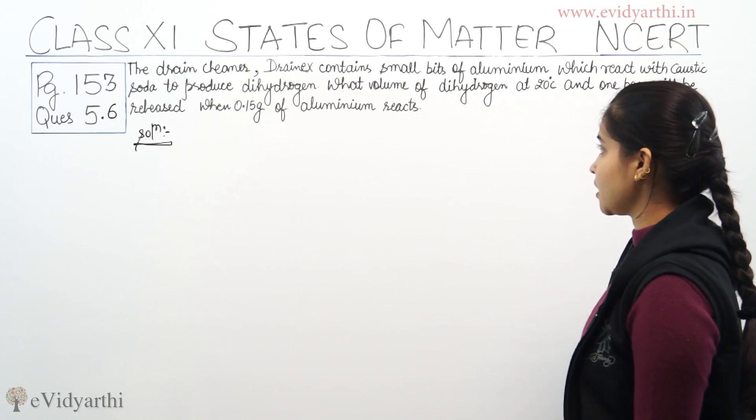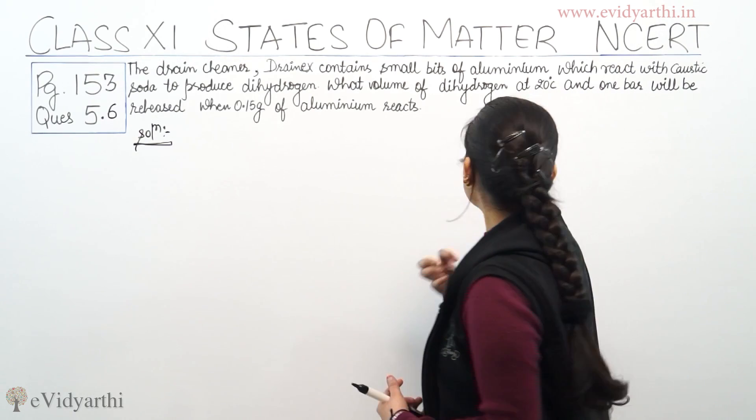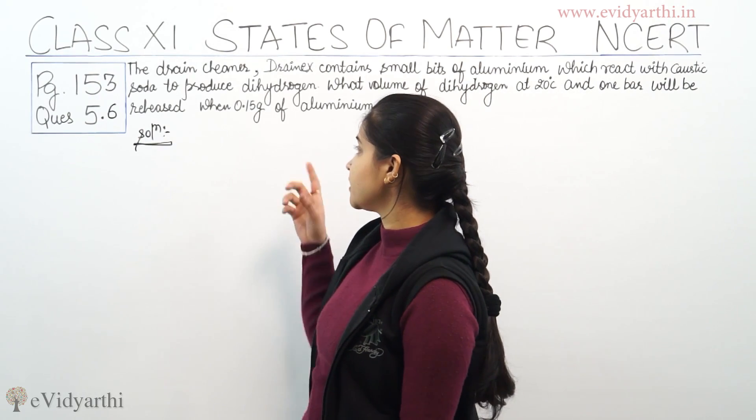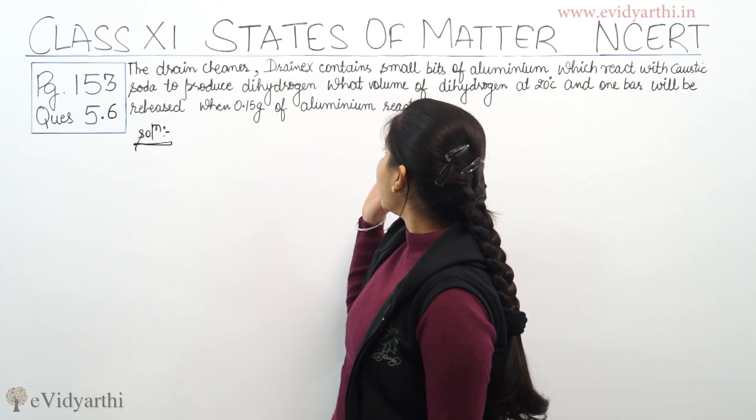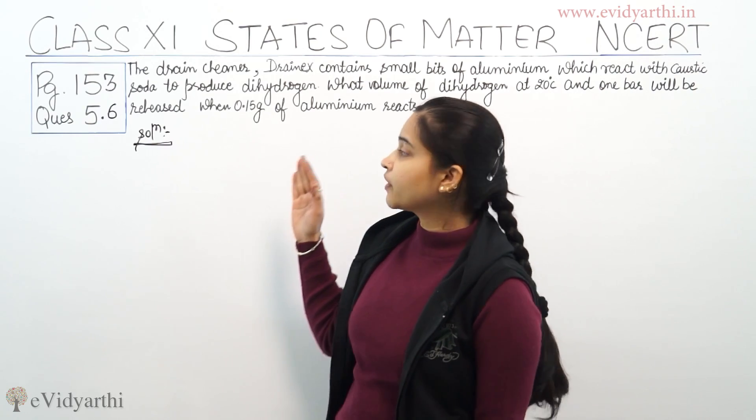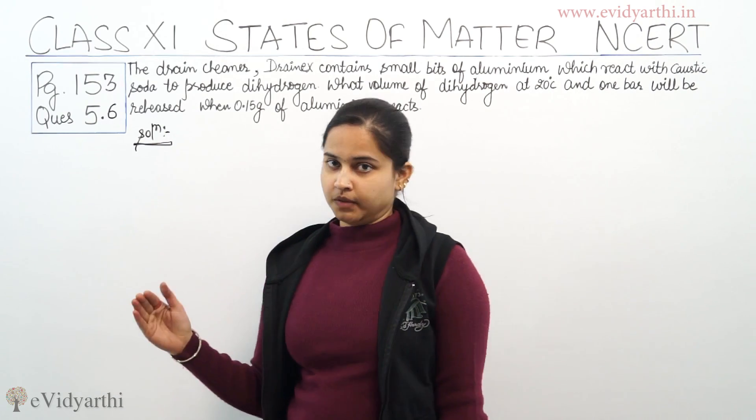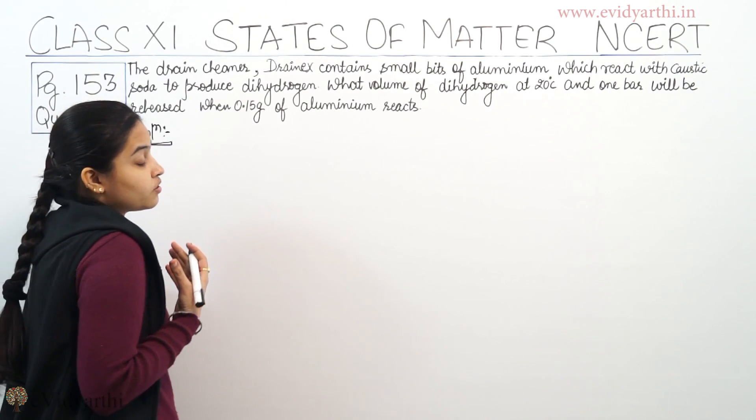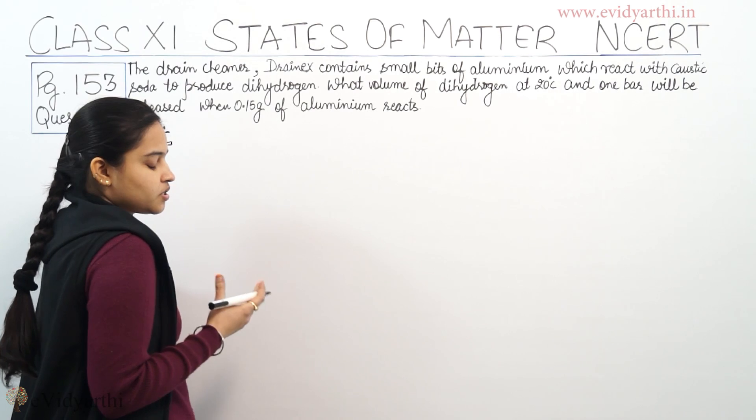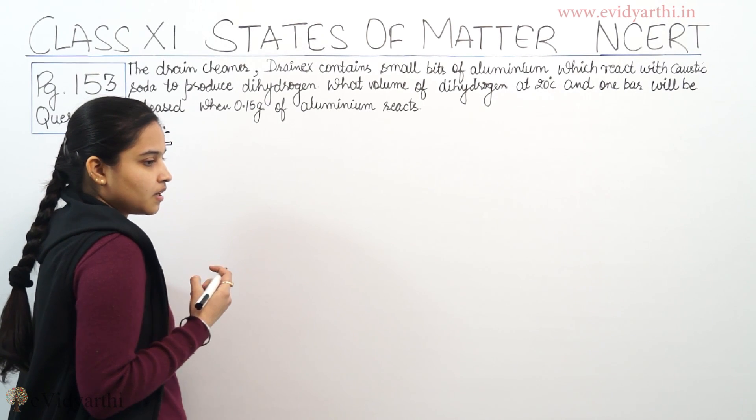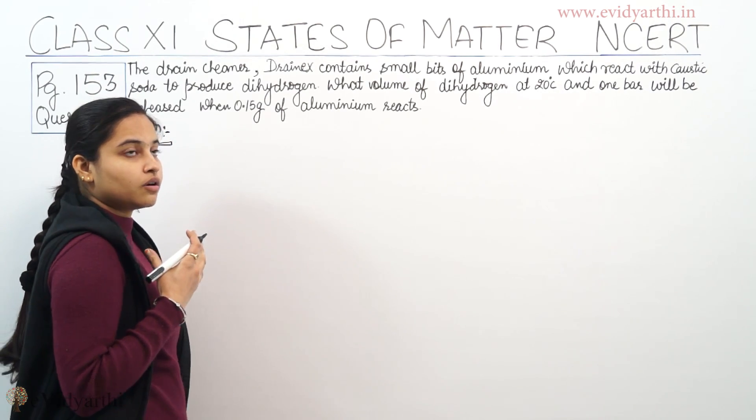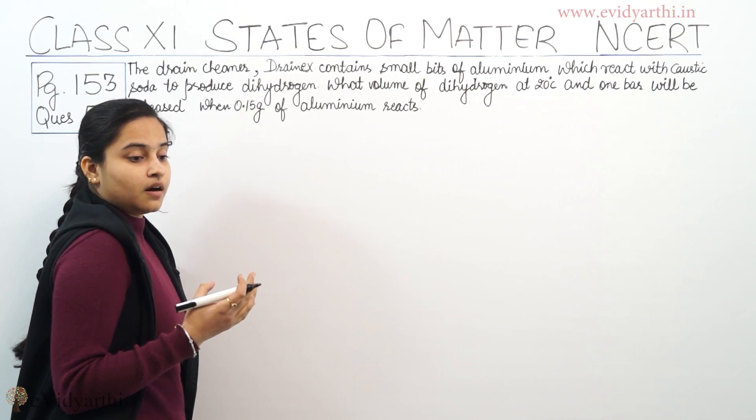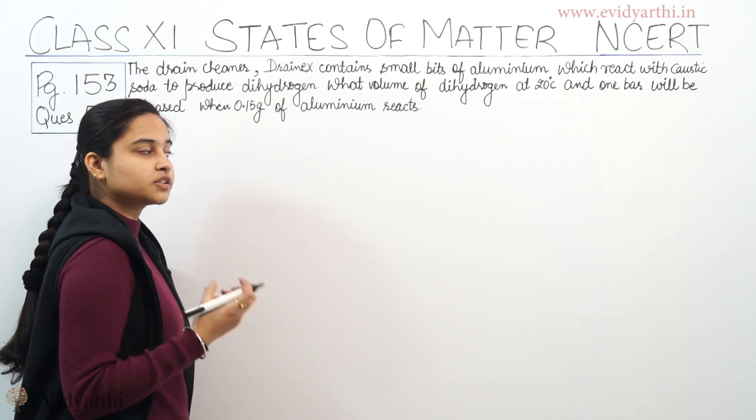What volume of dihydrogen at 20 degrees Celsius and 1 bar will be released when 0.15 gram of aluminium reacts? So we need to calculate the volume of dihydrogen at 20 degrees Celsius and 1 bar pressure when 0.15 grams of aluminium reacts with caustic soda. Let's begin with the question. First of all, I want that all of you should know what is the reaction when aluminium reacts with caustic soda.